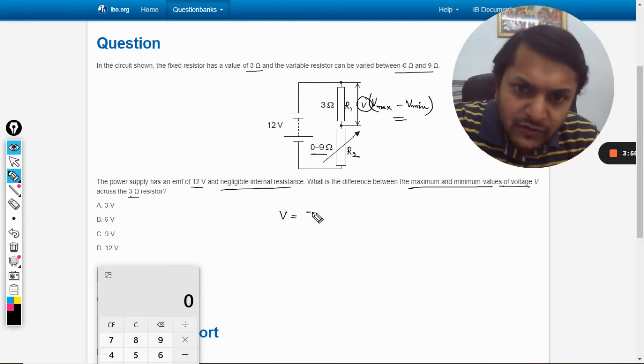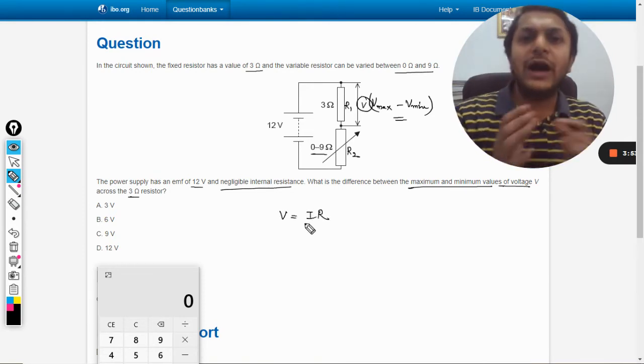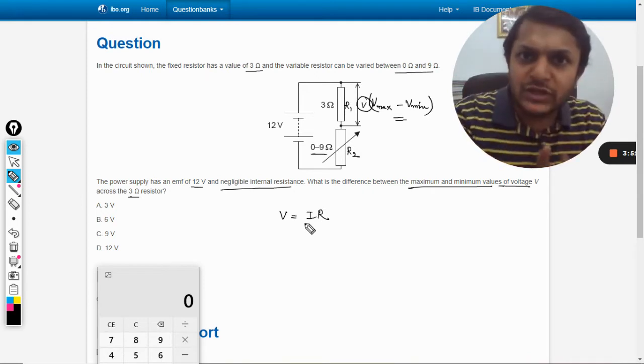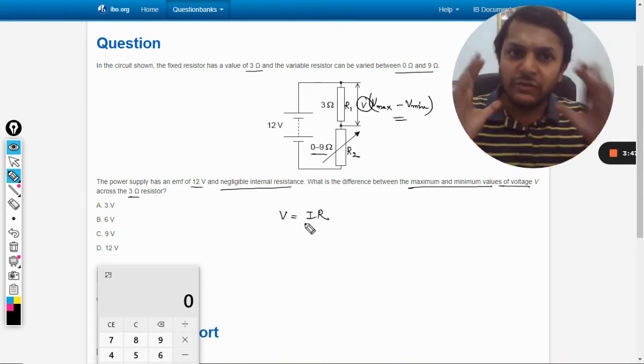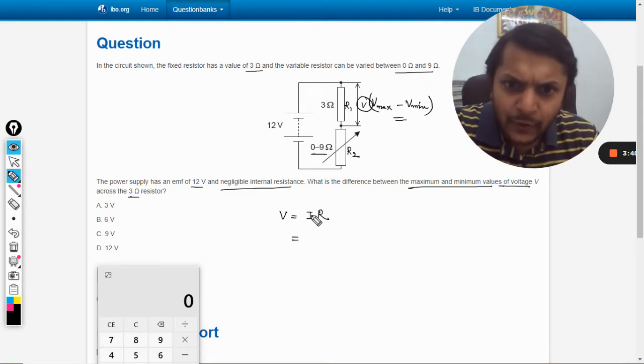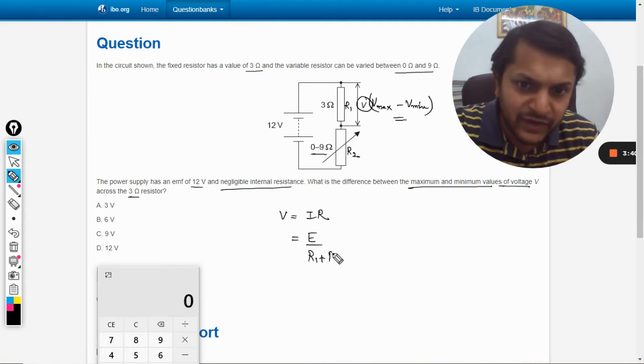To find V, V will be equal to I into R, where I is the current passing through the resistor and R is the resistor. If I'm talking about R1, it will be R1. So what is I now? I will be E divided by R_equivalent, which will be R1 plus R2, into R1.